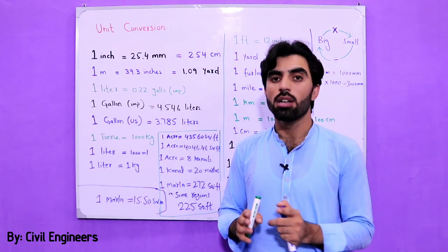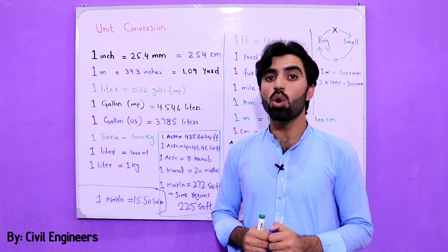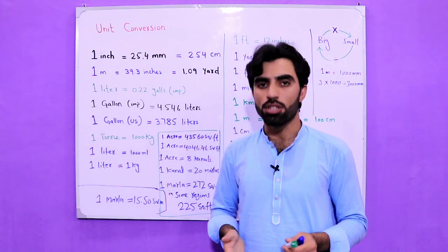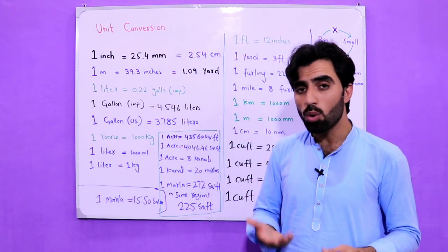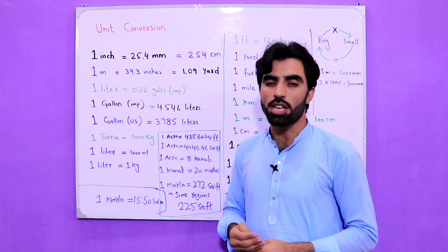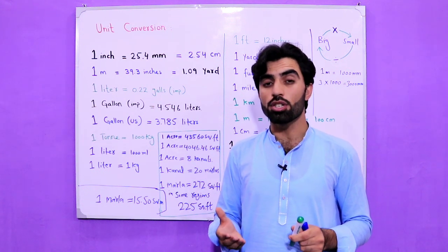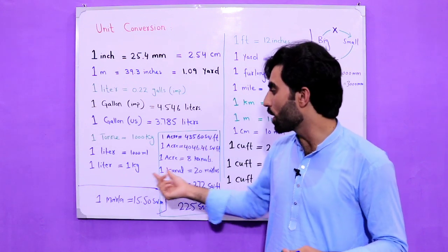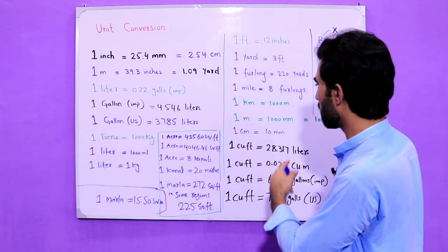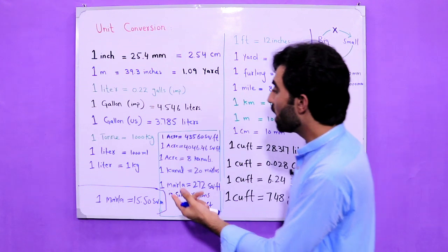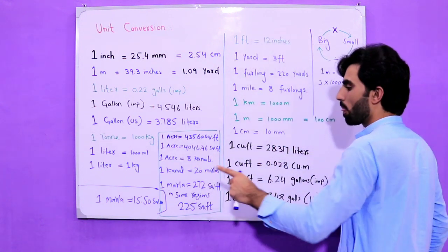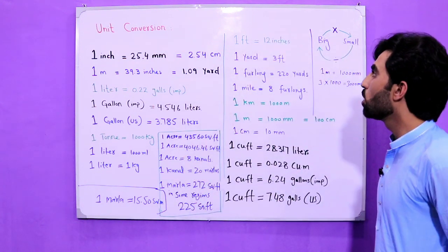In one cubic meter we have 1,000 liters, and therefore one cubic meter equals 1,000 kg, because one liter equals one kg. So one cubic meter equals 1,000 kg.